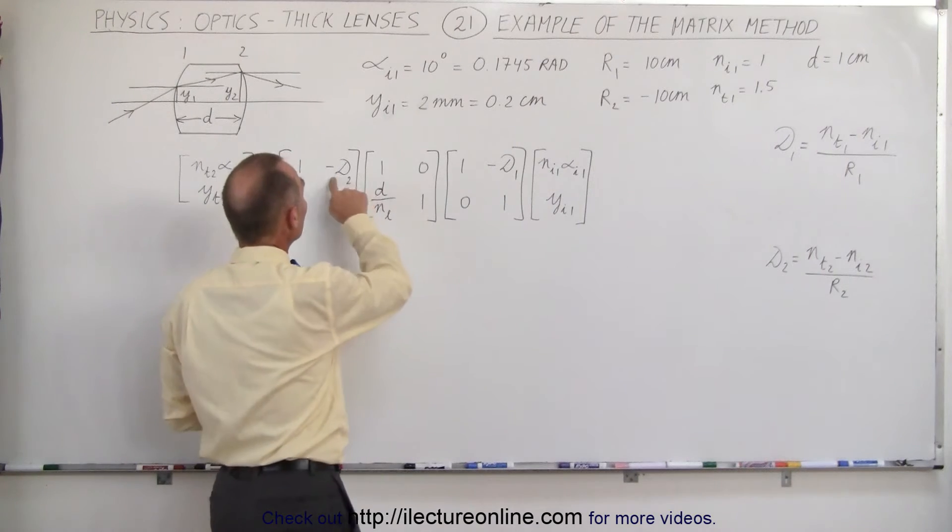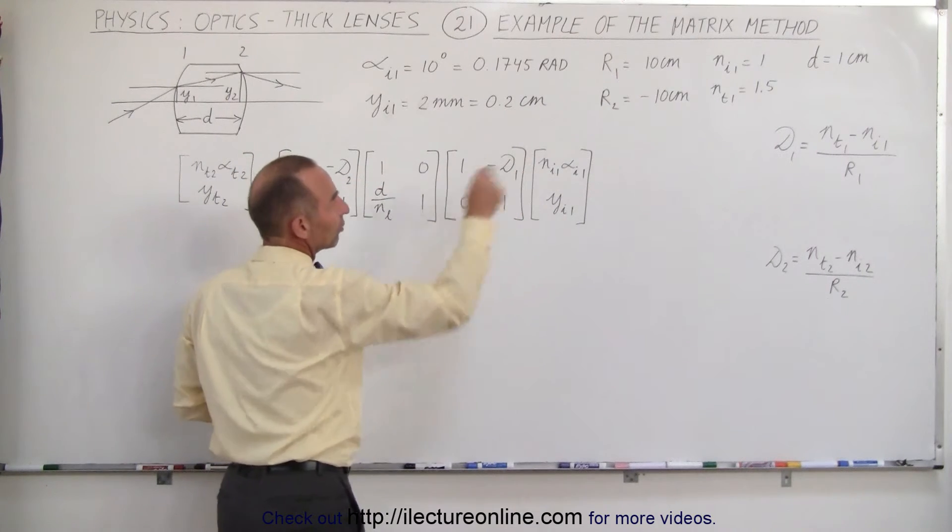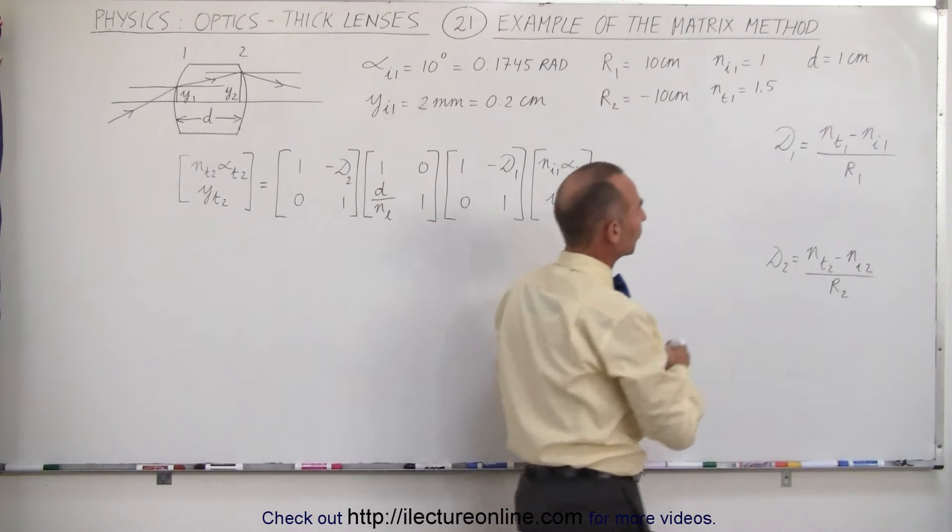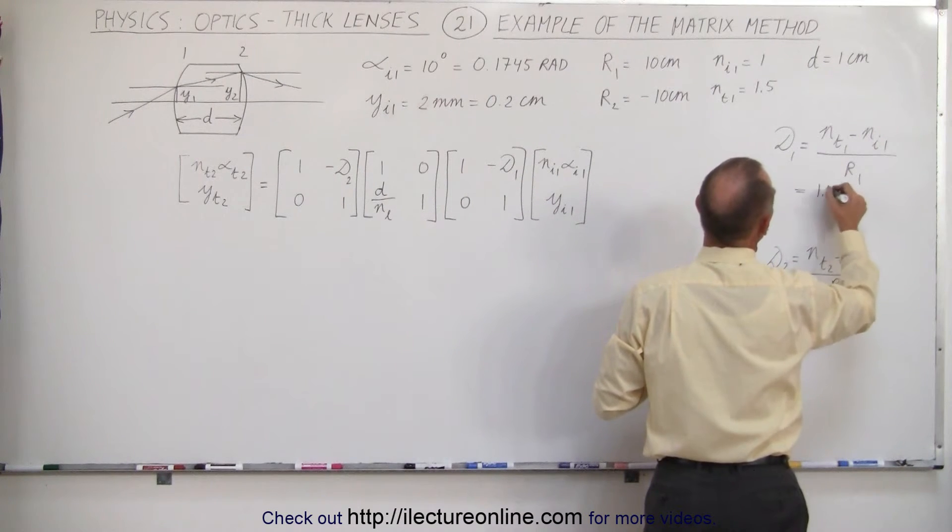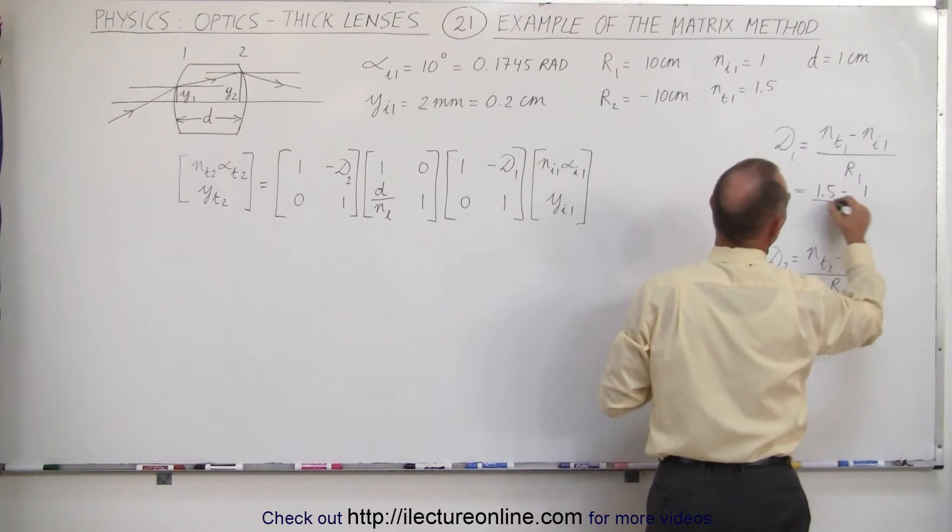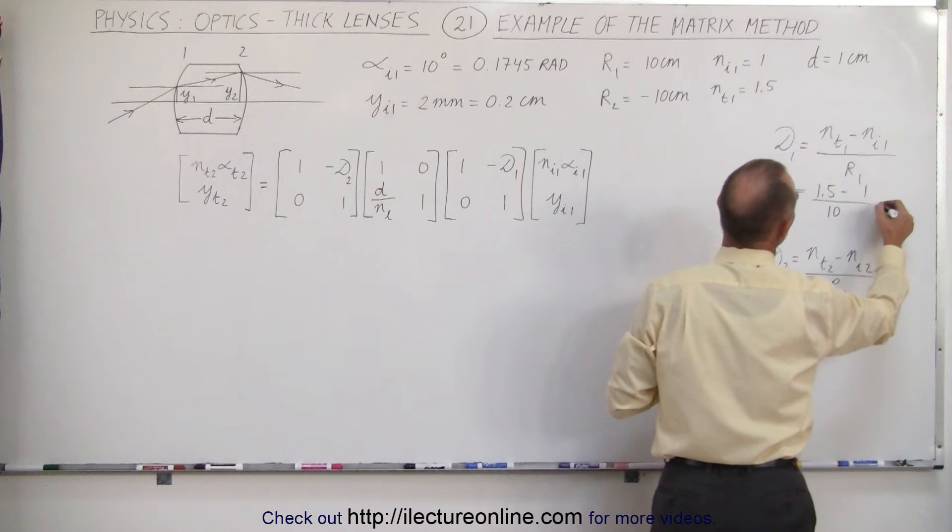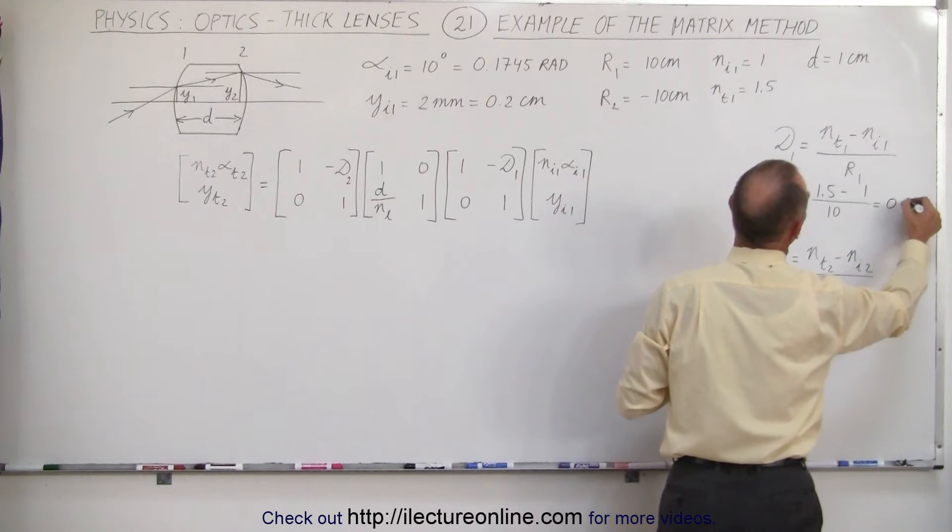Notice we also need to know the values of D1 and D2. Let's go ahead and calculate those. For D1, this is equal to the index of refraction of glass minus the index of refraction of air divided by the radius, which is 10cm. 0.5 divided by 10, which is 0.05.